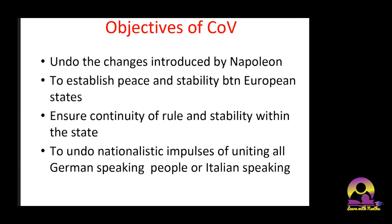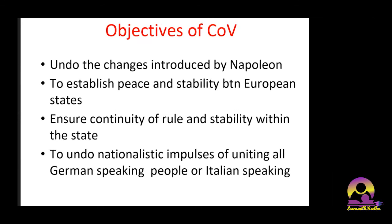The fourth objective was to undo nationalistic impulses — they did not want to unite linguistically similar people as Napoleon had promoted. They wanted to undo the concept of nationalism. However, it prevailed in people's minds. One good outcome was that after the Congress of Vienna, for another 40 to 50 years there were no major wars in Europe — it was very peaceful. But the nationalistic ideas remained and people would revolt later based on them.